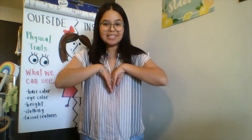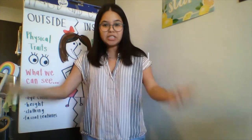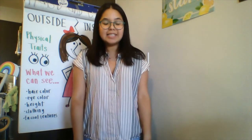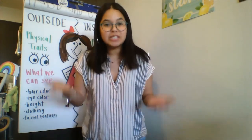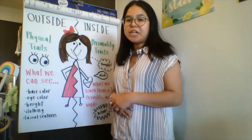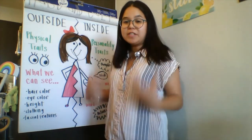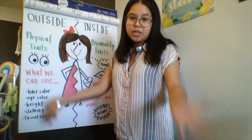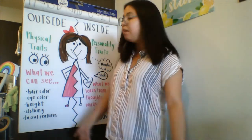There's outside traits and inside traits. Outside traits are what you see with your eyes. Inside traits are what you feel with your heart, what you hear, and what the character does. So let's look at that really quickly. Outside traits are your physical traits — physical traits is what you look like on the outside.